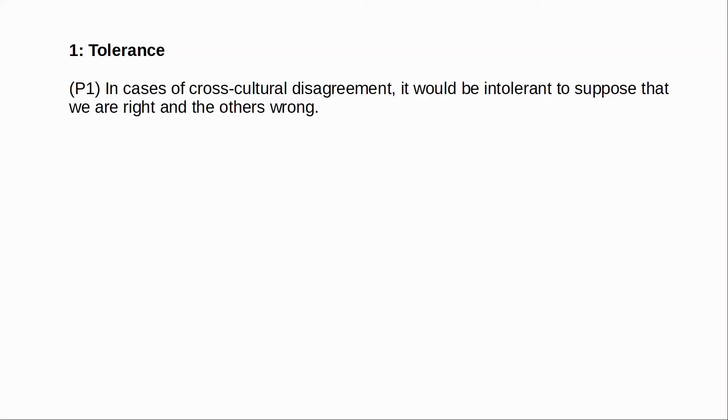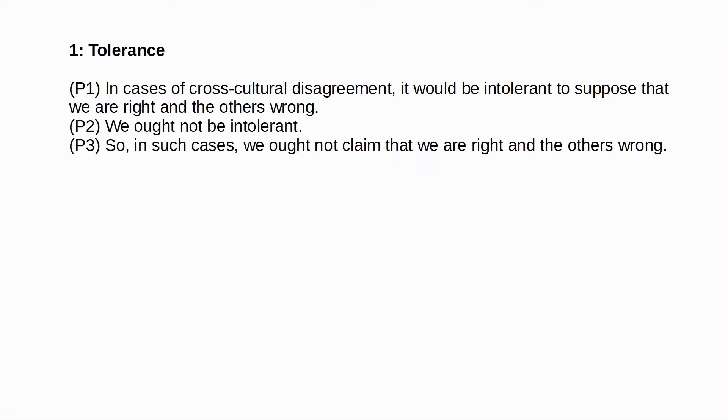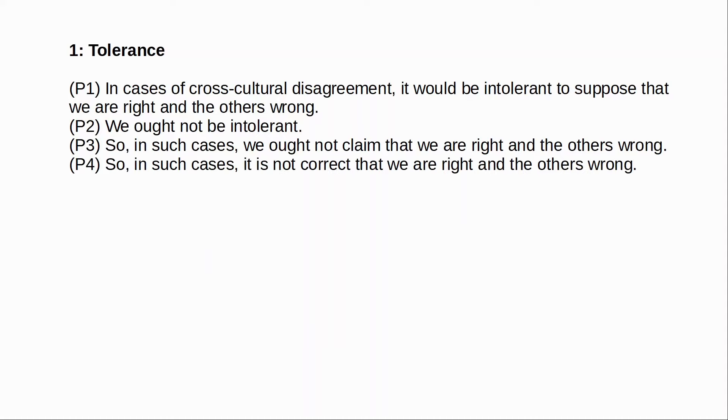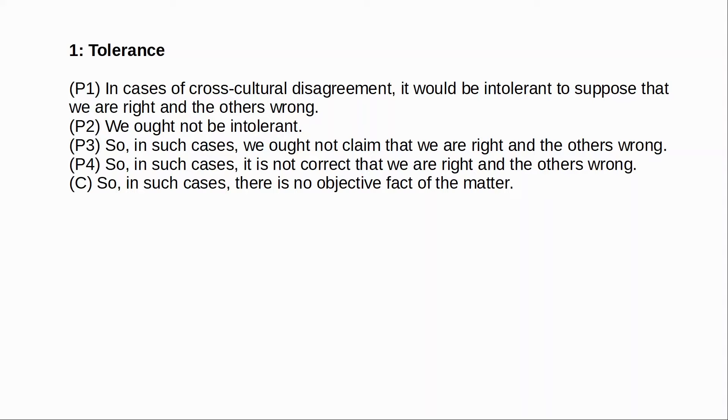Some people consider moral realism to be an arrogant position, dismissive of the values of other cultures. Moral realism commits us to the view that the values and convictions of other cultures are inferior to ours. Enoch summarizes the tolerance argument as follows: in cases of cross-cultural disagreement, it would be intolerant to suppose that we are right and the others wrong. We ought not be intolerant. So in cases of cross-cultural disagreement, we ought not claim that we are right and the other culture is wrong. So in such cases, it is not correct that we are right and the other culture wrong, and there is no objective fact of the matter — no objective moral truth — which is just to deny moral realism.